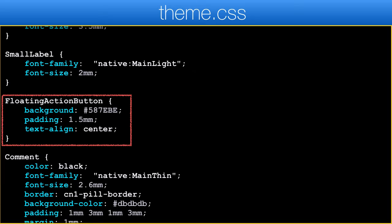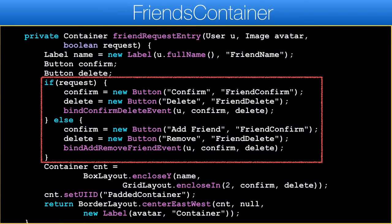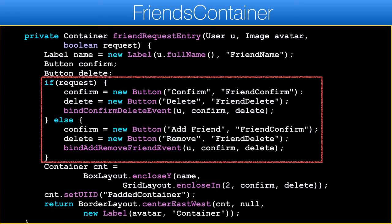Once this is done, pressing that button should automatically prompt for permission and upload the contacts from your phone. In order to make the fab look good we also need a couple of CSS changes — this mostly sets the fab to Facebook-style blue color. Each friend suggestion has a button to accept or remove the suggestion, and each friend request has similar button pairs. We added the bind confirm delete event or bind add remove friends event call to bind event listing to the buttons.